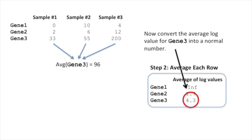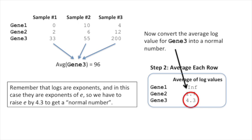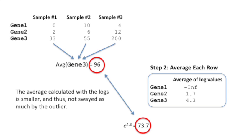Now convert the average log value for gene 3 into a normal number. Remember that logs are exponents, and in this case they are exponents of E, so we have to raise E by 4.3 to get a normal number. E raised by 4.3 equals 73.7. The average calculated with the logs is smaller, and thus not swayed as much by the outlier.